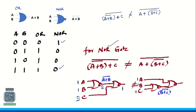For the RHS circuit, first evaluate B and C together: B and C have inputs 1 and 0. For inputs 1 and 0, the NOR gate output is 0. So here we get 0. Now A is 1, so inputs to the next NOR gate are 1 and 0, and the output for 1 and 0 is 0. So the LHS gives output 1 but the RHS gives output 0 — these two are not equal. That is why NOR gate does not satisfy the associative property; it is non-associative.